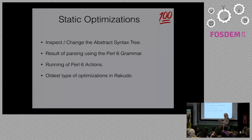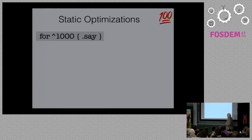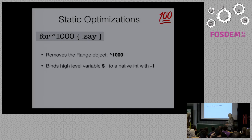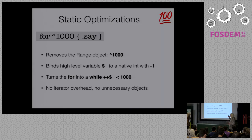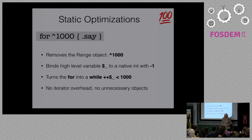We actually try to take things out of the static optimization and move them into the newer stuff, so it's not really in active development anymore. To give you an example: a for loop doing something a thousand times in Perl 6 — what the optimizer does is it removes the range object, binds the loop variable to a native int with the value of minus one, and turns the for loop into a while loop, pre-incrementing until it hits a thousand. So we have no iterator overhead and no unnecessary objects — this is basically really fast, and it jits very well into machine code. The empty loop example of this is actually faster than Perl 5.